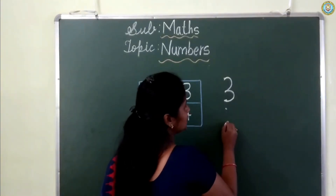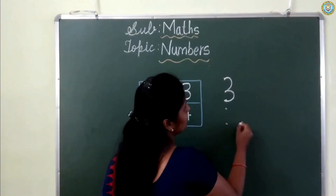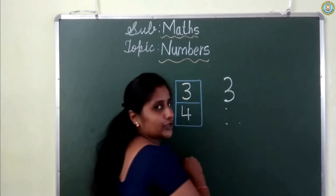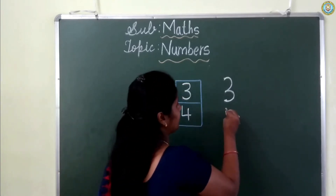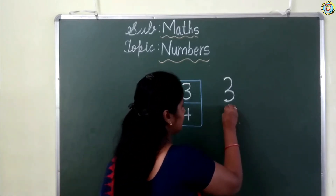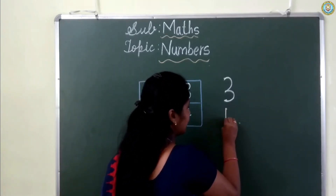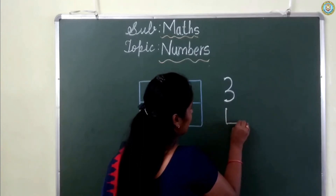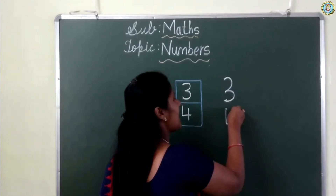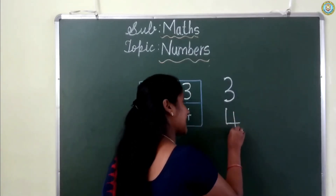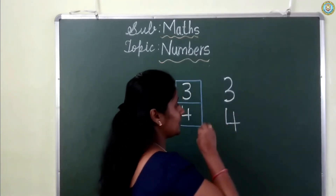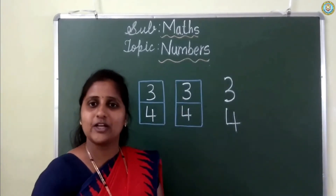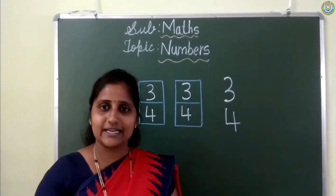1, 2, 3. Standing line, sleeping line, and smiling line to make the number 4. Got it children?